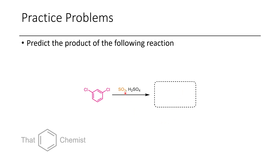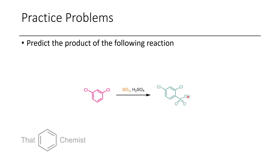In the final problem, we have oleum — a mixture of sulfur trioxide and sulfuric acid — in the presence of 1,3-dichlorobenzene. The two chlorines are weak electron-withdrawing groups but ortho-para directors, so one sulfonyl group should be directed to the para position. Once added, the ring is too electron-deficient for another electrophile. However, with nitric acid you might still add a nitro group para to one chloro, ortho to the other, and meta to the sulfonyl.